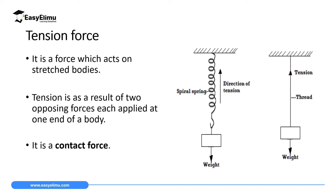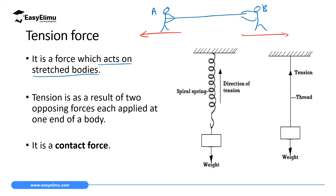Tension force is a force which acts on stretched bodies. For example, if two people A and B are standing holding a rope — B holding one side and A holding the other — when A pulls the rope one way and B pulls the other way, the rope will be under tension in the middle. If someone cuts that rope, person A will fall to one side and B will fall to the other side.